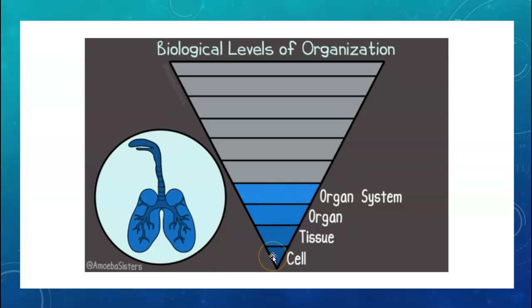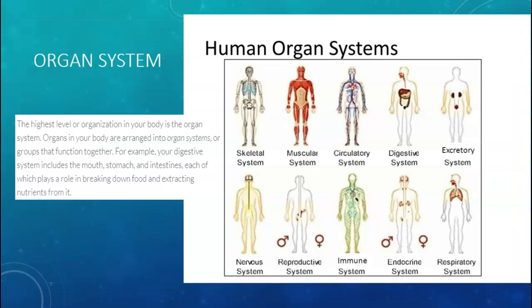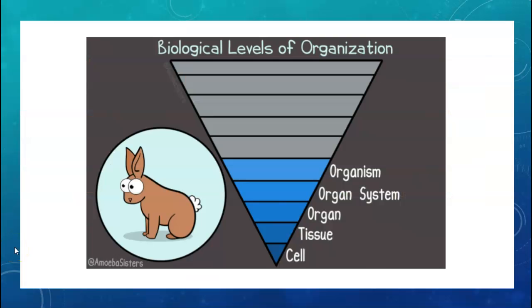Using the stomach as an example: stomach cells organize into stomach tissue. Stomach tissues create the organ — the stomach itself. The stomach is part of an organ system called your digestive system, which has other parts to it, like your intestines and your mouth. And finally, when you take all of those organ systems and put them together, you get the whole organism.